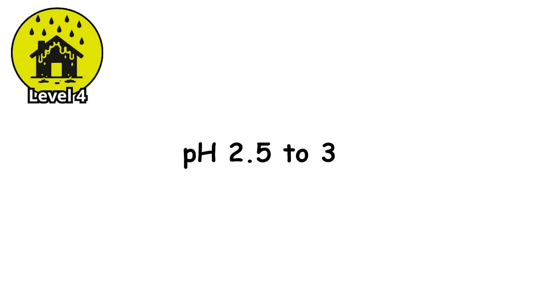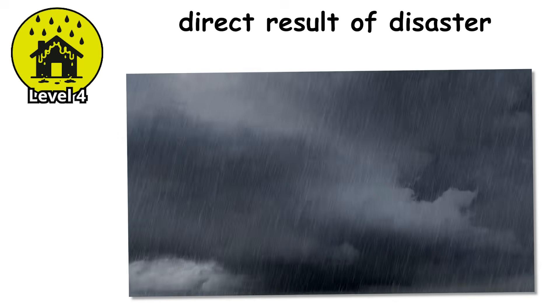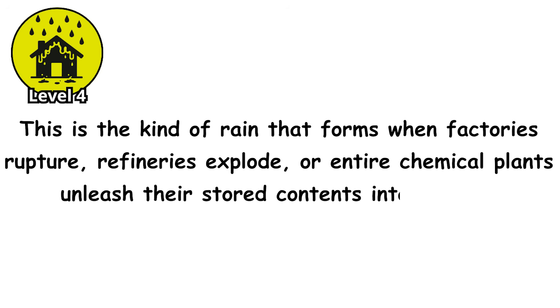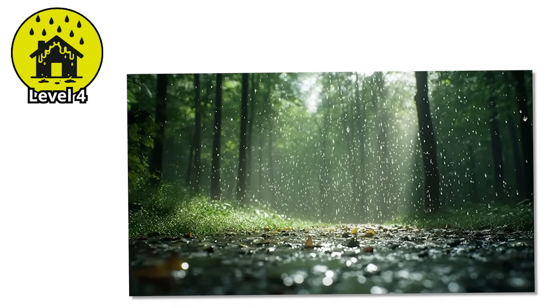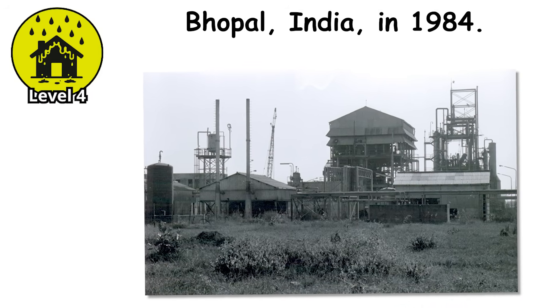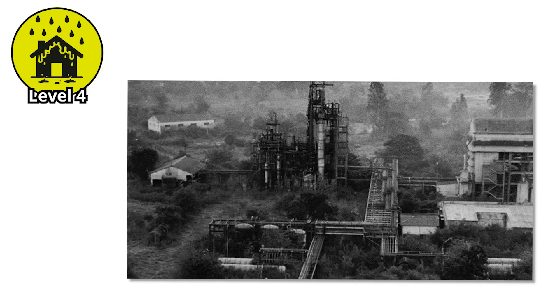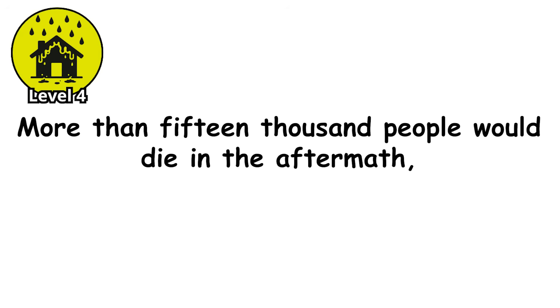Level 4. pH 2.5 to 3.0. At this level, acid rain stops being a slow environmental killer and becomes a direct result of disaster. You are no longer dealing with routine pollution — this is the kind of rain that forms when factories rupture, refineries explode, or entire chemical plants unleash their contents into the air. The most infamous example appeared over Bhopal, India, in 1984. After a midnight leak of methyl isocyanate and other industrial gases, survivors described rainfall that irritated skin and burned eyes. More than 15,000 people would die in the aftermath.